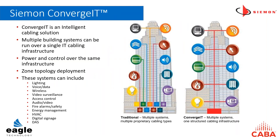When we look at intelligent buildings, the three things to consider are: rethinking the way you design, the way you procure, and the way you deploy your buildings. What we're suggesting is a single unified IP infrastructure. That's where the Siemens company comes in — we manufacture high-quality infrastructure including Cat5, Cat6, Cat7, fiber, and all the associated passive layer. It takes a different means of procuring.